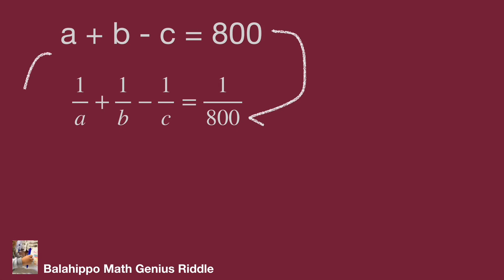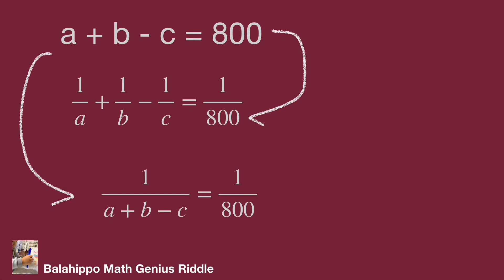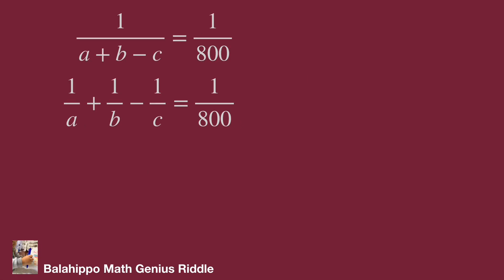I make the equation a plus b minus c equal to 800 into its reciprocal. So we have a new equation: 1 over (a plus b minus c) equal to 1 over 800. Comparing to the second equation, 1 over a plus 1 over b minus 1 over c, which also equals 1 over 800. The new information is: 1 over a plus 1 over b minus 1 over c equals 1 over (a plus b minus c).